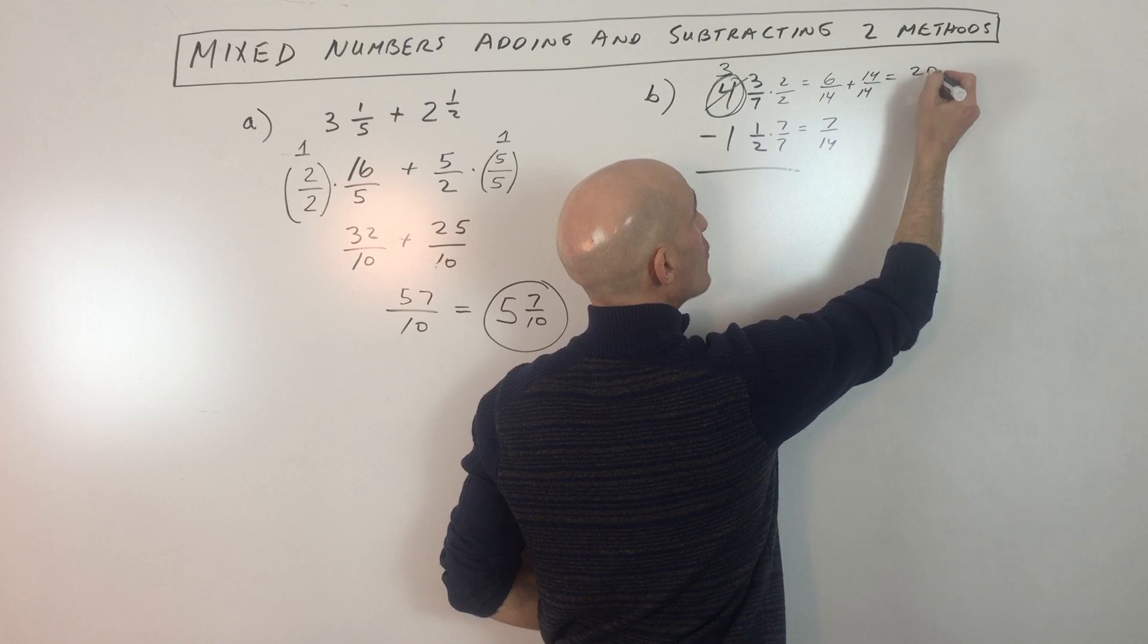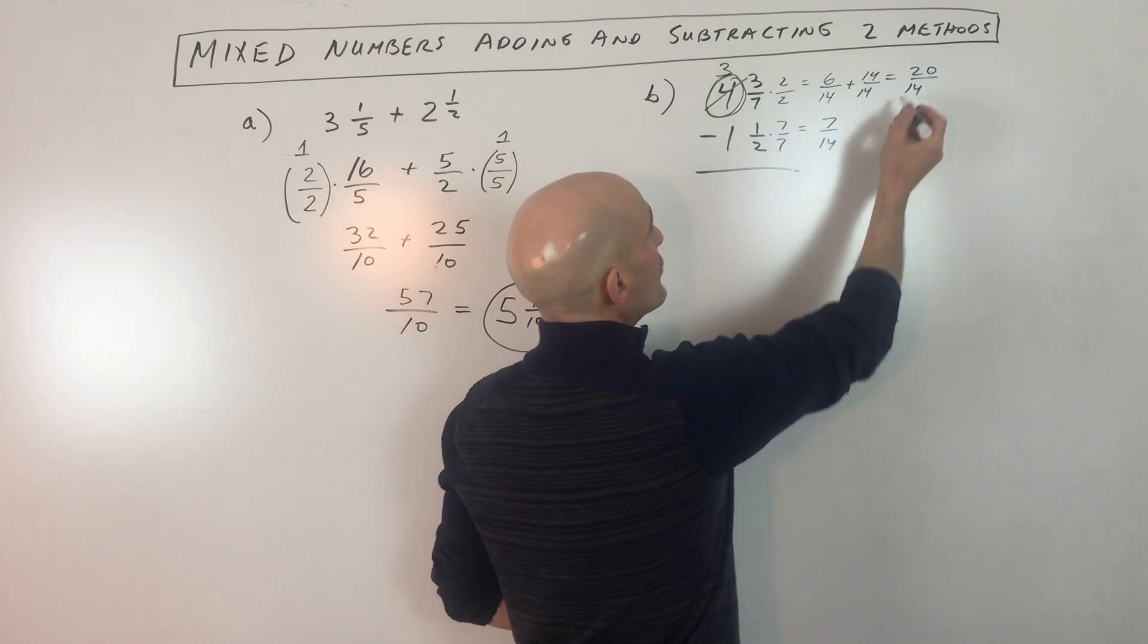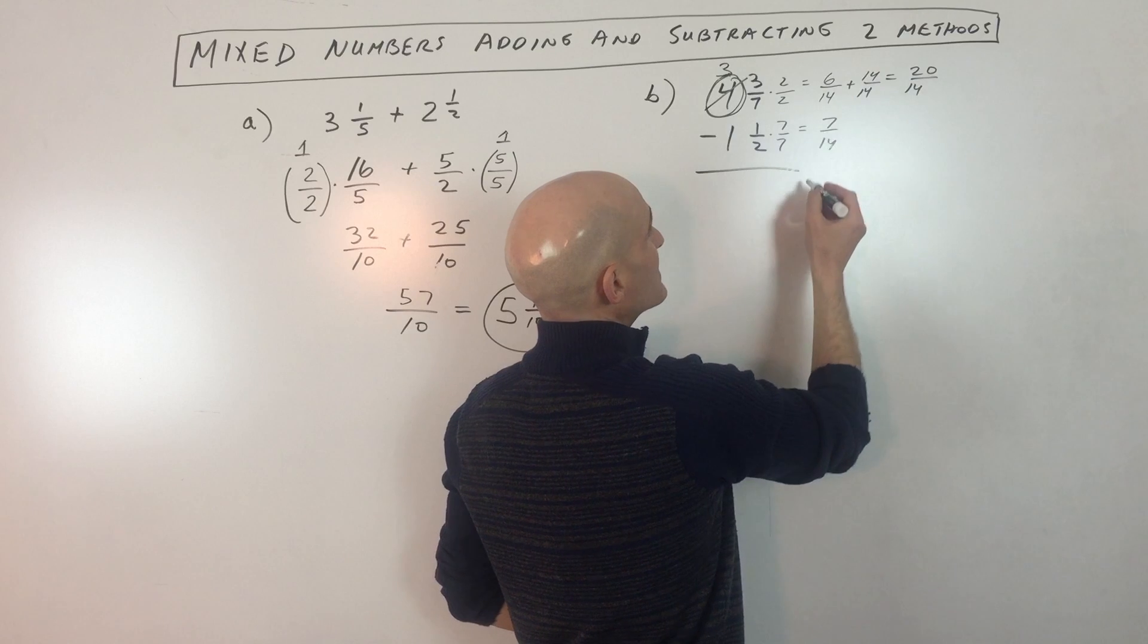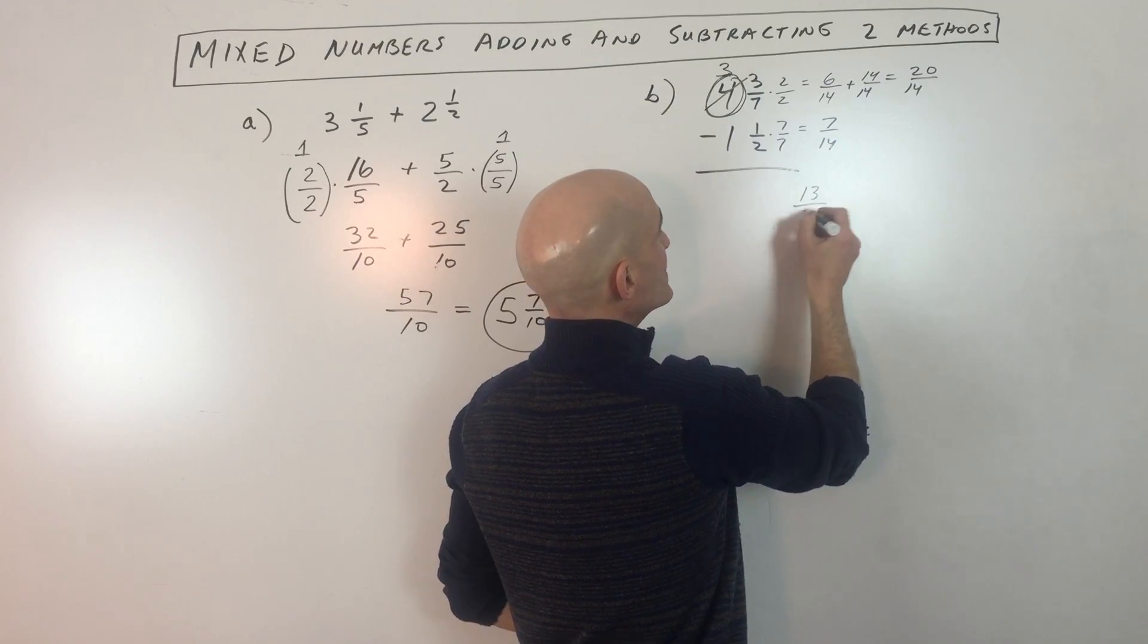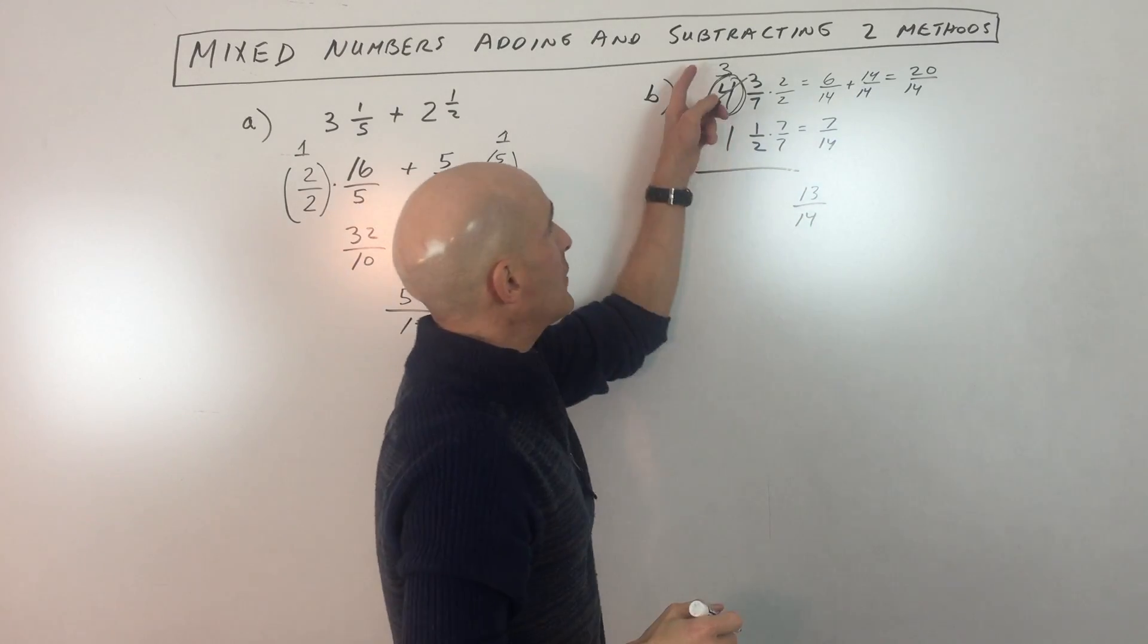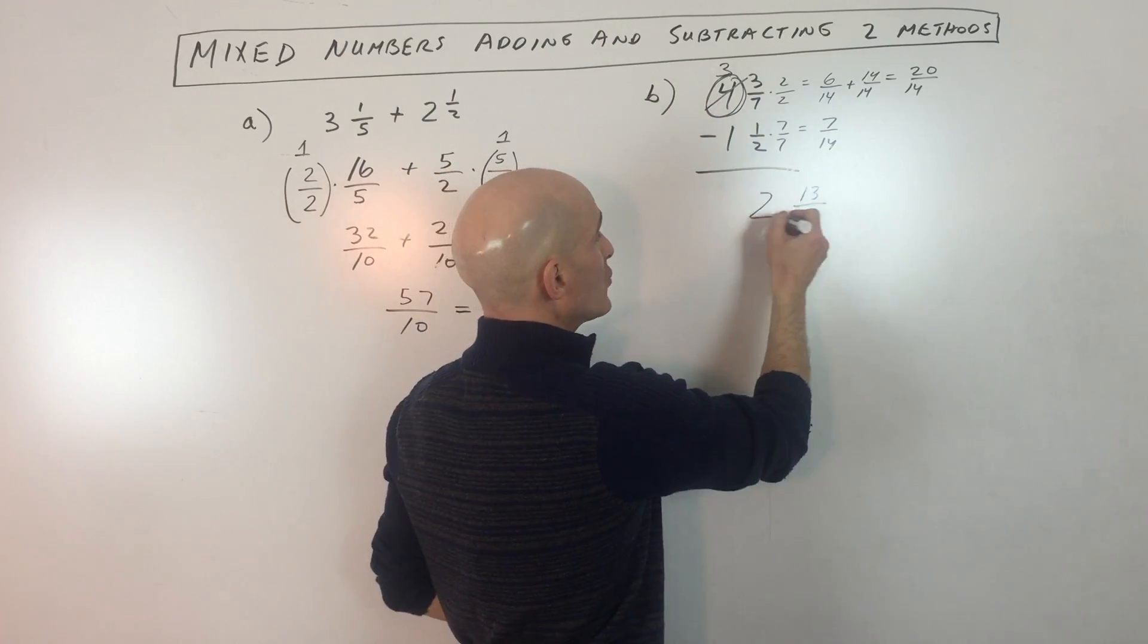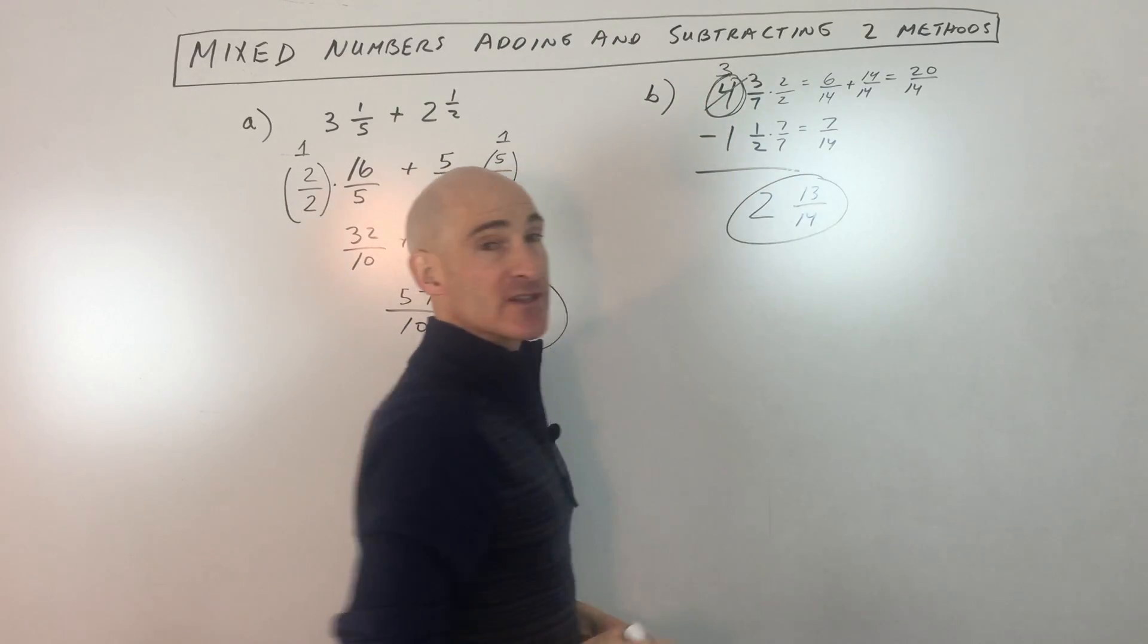Six plus 14 is 20 fourteenths, right? And now you can see we can subtract. 20 minus seven is 13 fourteenths. And then we're going to subtract the whole numbers. Three minus one is two. So we have two and 13 fourteenths.